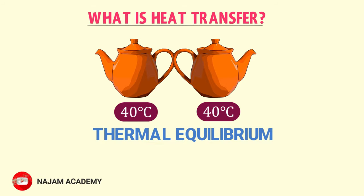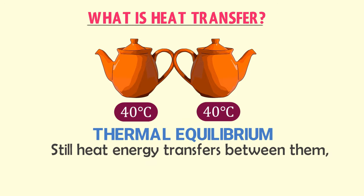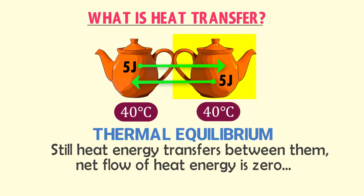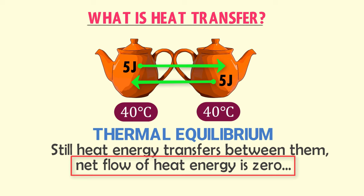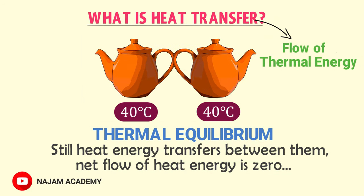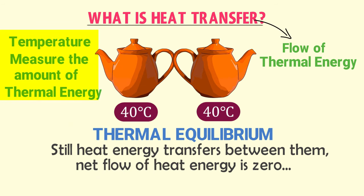Remember this important point which a lot of teachers skip. If two objects are in thermal equilibrium, it doesn't mean that heat energy doesn't transfer between them. Rather, heat or thermal energy still transfers between them, but the net flow of heat energy is zero. For instance, if five joules of heat energy flows from one object to the other, then five joules flows back. Thus the net flow is zero, and both objects are in thermal equilibrium. Therefore, heat transfer is the flow of thermal energy between two objects, while temperature only measures the amount of heat energy possessed by an object.